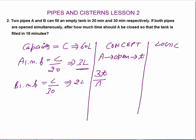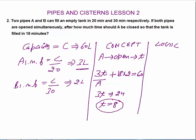So A's fill is 3T liters. As per the question, B was open for the full 18 minutes. In 18 minutes B fills 18 × 2 = 36 liters. Total capacity is 60 liters. So 3T = 60 − 36 = 24, which gives T = 8. Pipe A was open for 8 minutes.